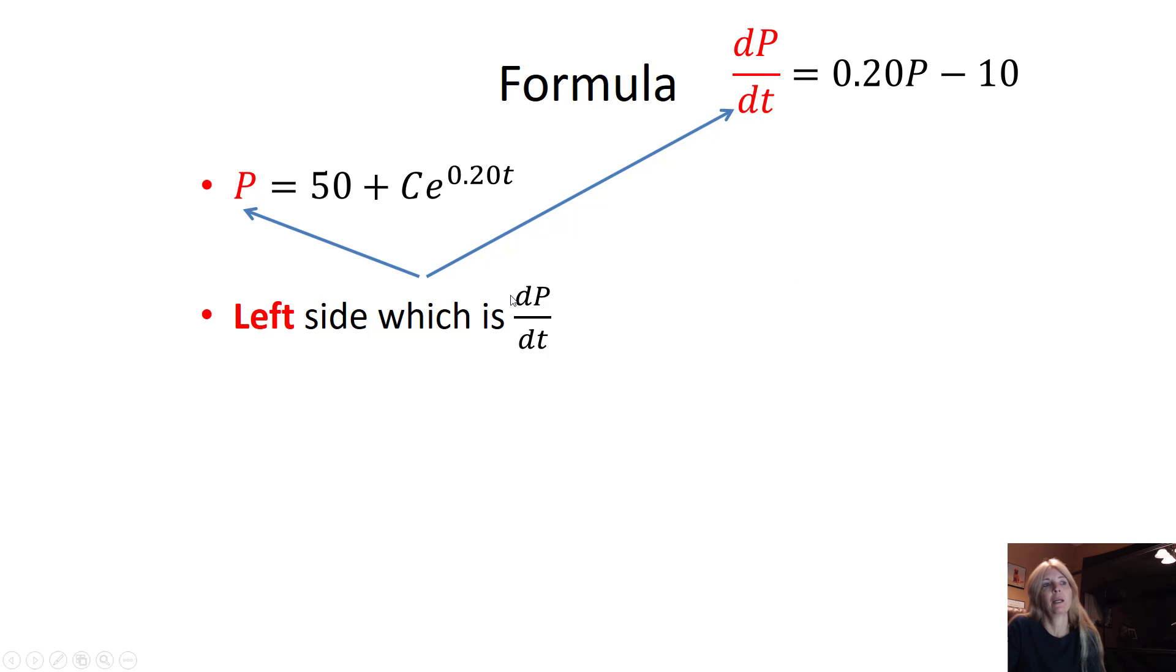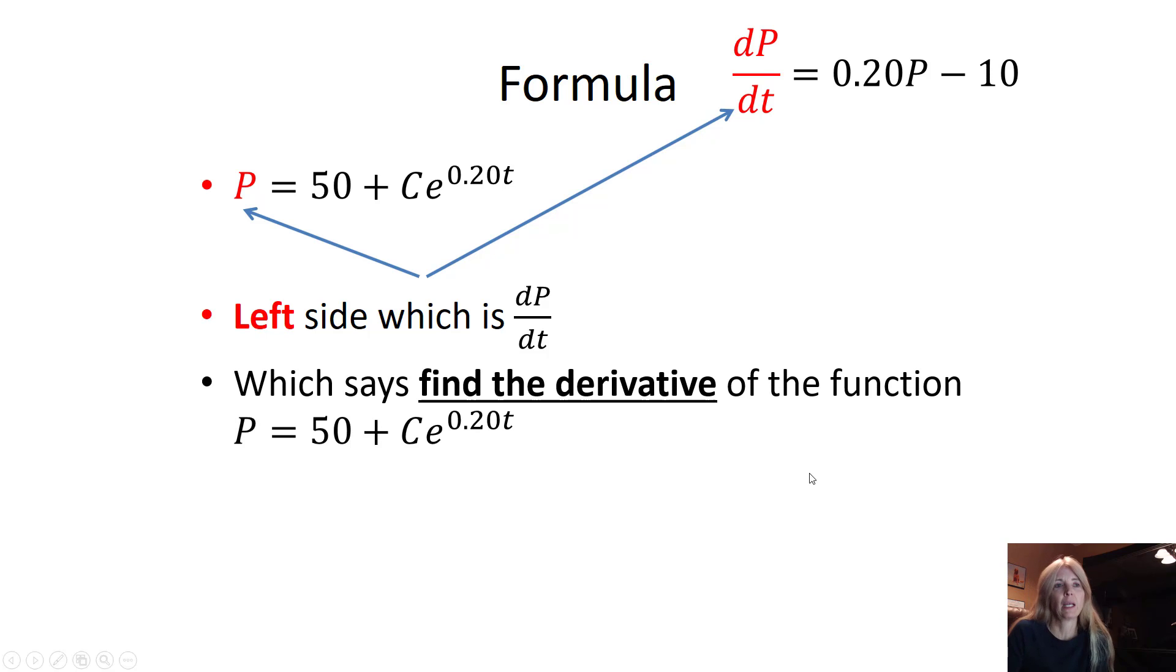So the left-hand side, if I want to substitute, I'm going to take the derivative of this, but I'm only looking at the left, so dP/dt. So this says find the derivative of this actual function. That's what this means for the left-hand side. I can find the derivative. The derivative of 50 is just a constant and goes away. The derivative of e, this is that e to the kt, is k e to the kt.